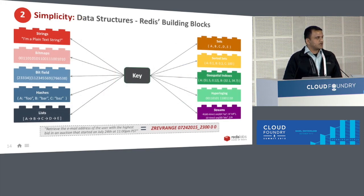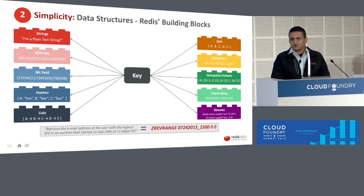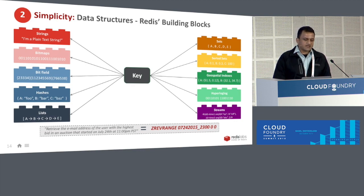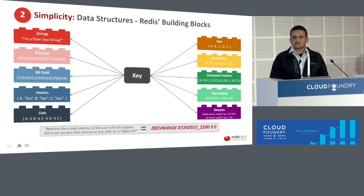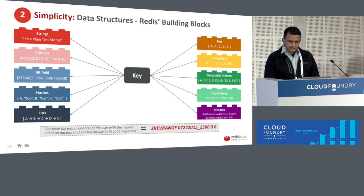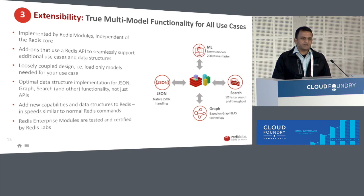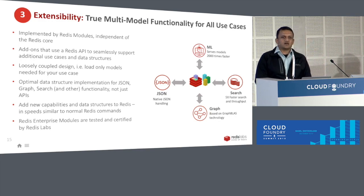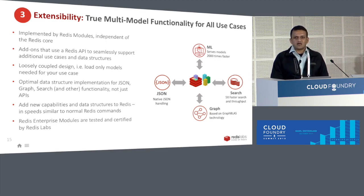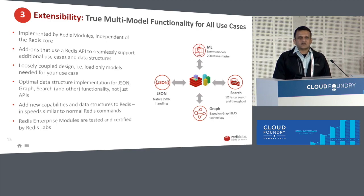The second aspect is simplicity. Redis is a NoSQL database running in memory that supports data structures — highlighted here as Lego blocks. Using these data structures, you are able to compose your solution and address your use case using 10 basic data structures available in Redis. The third aspect is extensibility. Redis gives you those 10 basic data structures, but if you have a case where you need additional capability, Redis allows you to extend its functionality through the concept of modules.